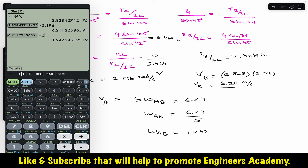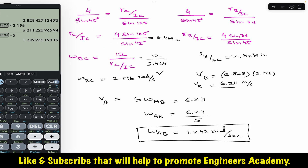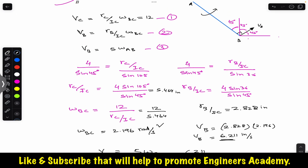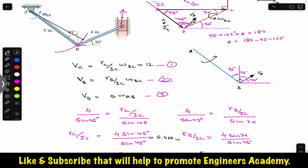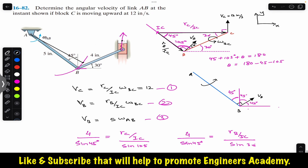So ω_AB = 1.242 radians per second — that is the required solution. I hope this discussion helps you in solving problems for the instantaneous center of zero velocity. Let me know in the comments if this helps, and do subscribe to Engineers Academy for more solutions from Engineering Dynamics by Hibbeler.